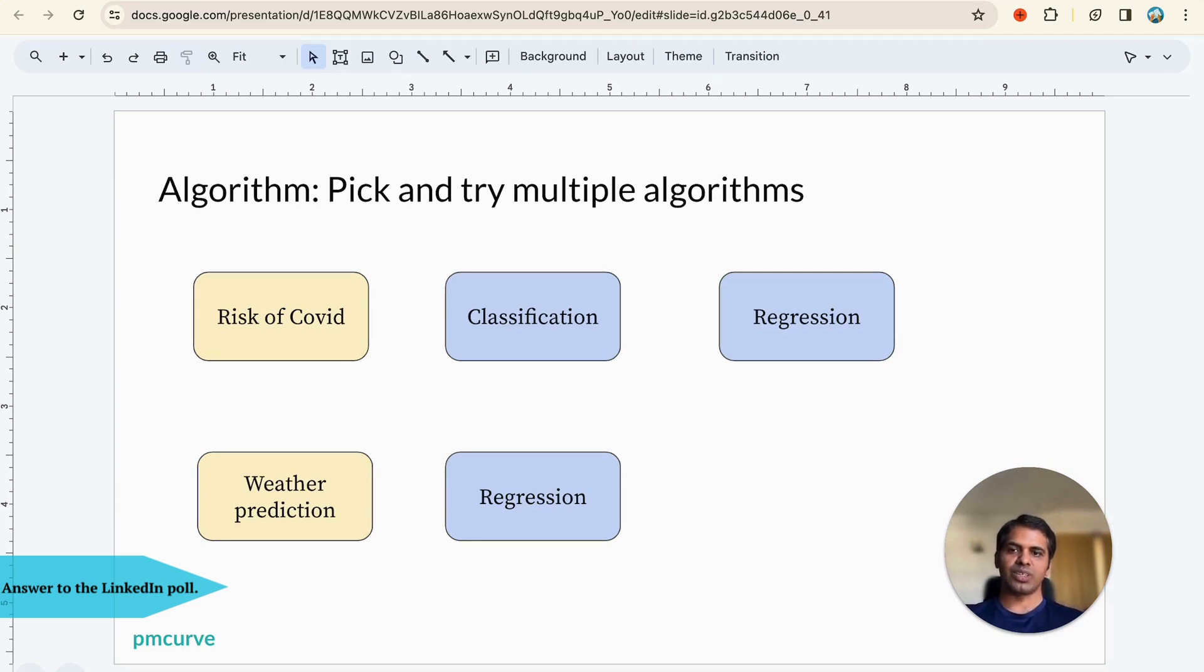Risk of COVID can be both classification and regression. If you're trying to assess risk in terms of number like 0 to 100, what is the probability, that becomes more of a regression because you'll say there's a 98% risk or 70% risk. But if you say that risk is high, low, or medium, just three buckets, then it could become a classification algorithm. Weather prediction is more of a regression because you're trying to predict temperature, wind velocity, humidity based on past data.